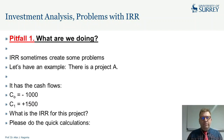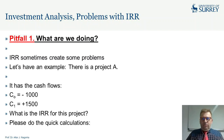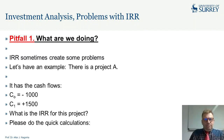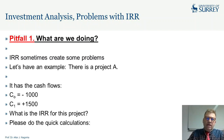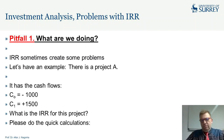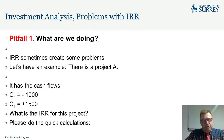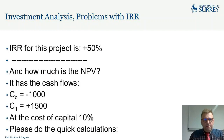Pitfall number one. We have a project A. A very nice project. The cash flow is initially minus 1,000 and in period one it gives 1,500. What is the IRR of this project? The IRR of this project is 50% — plus 50%. Fantastic project, really.